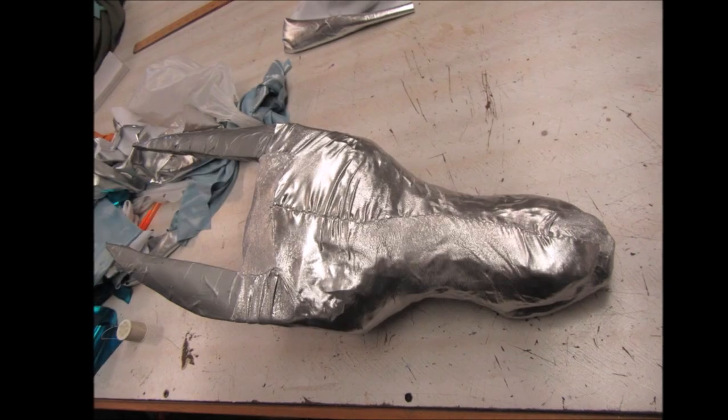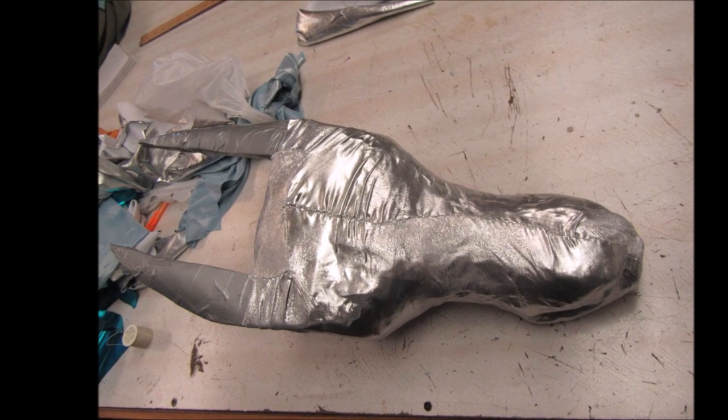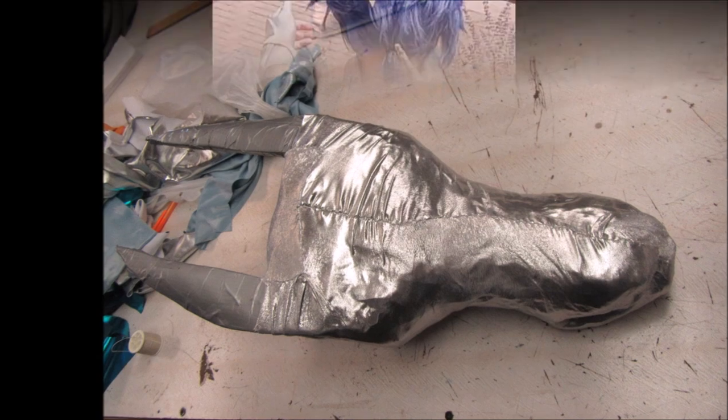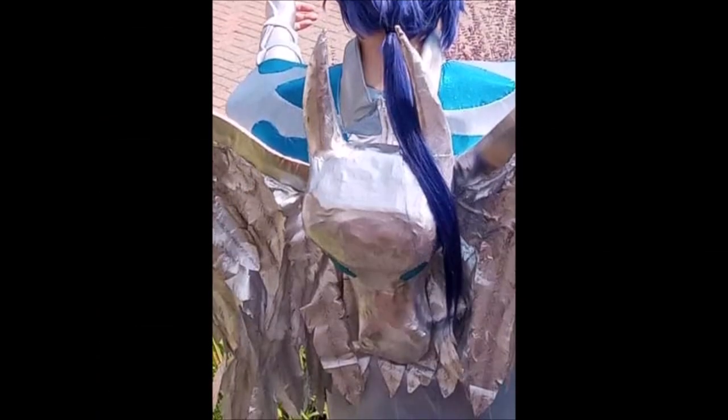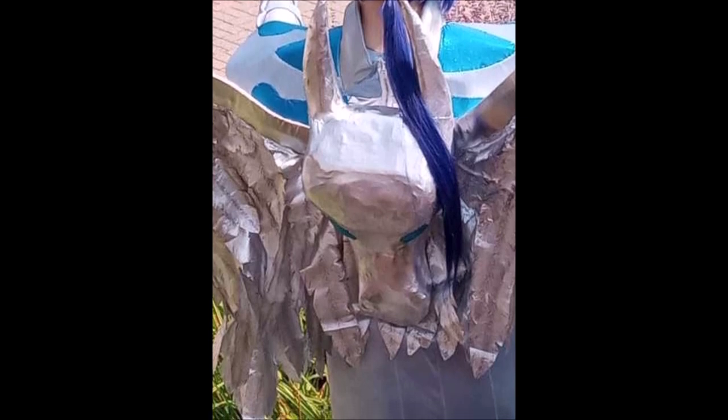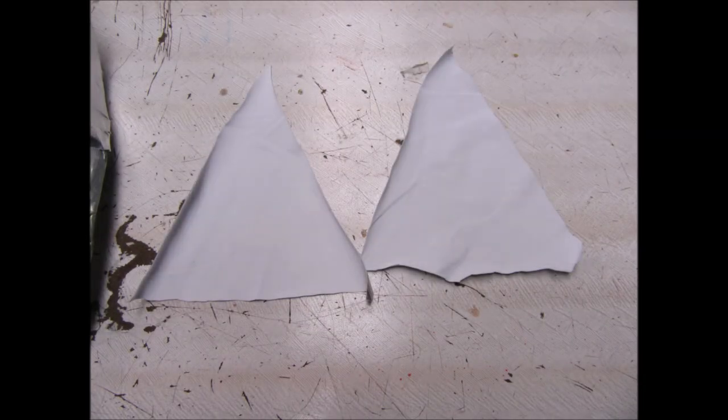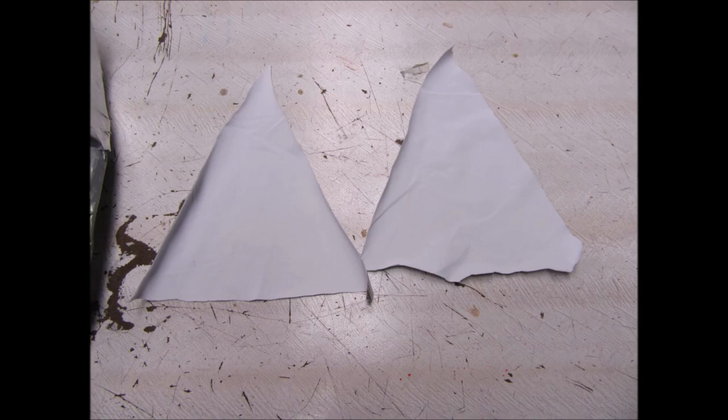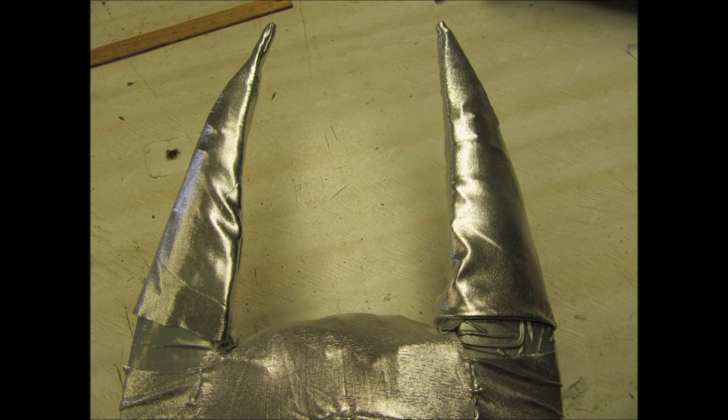Once the main body was covered as best I could, I stitched any loose fabric on the back closed. This part will always be against my body, so it doesn't have to look pretty. It just has to keep things from peeling back apart. After that, I cut a couple large triangles in my fabric and sewed them into cone shapes for the ears. I slid them in place, trimmed any excess, and hidden stitched them where the slits in the original fabric were.